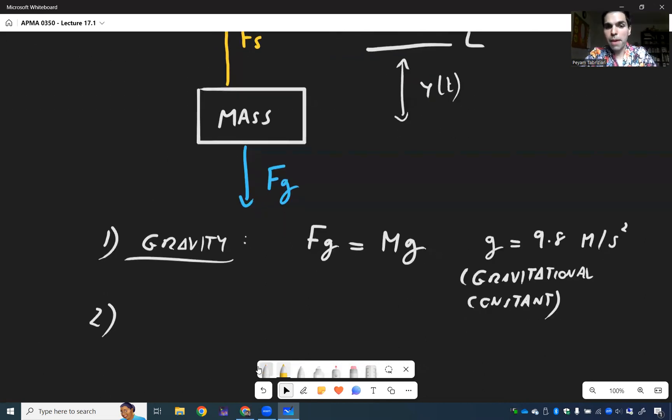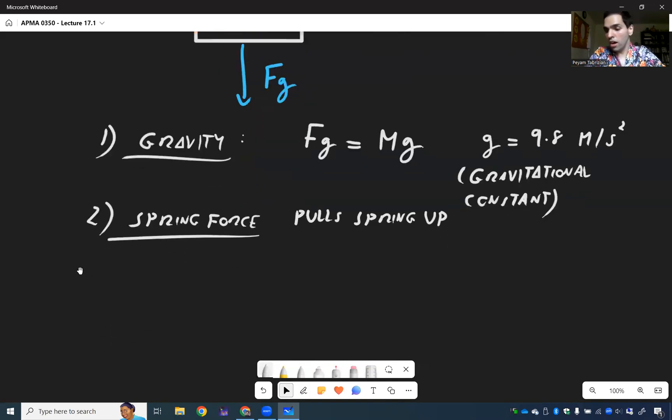And that depends on the material of the spring. Spring force called FS pulls spring up. And this is by what's called Hooke's law, where FS is minus Ks, minus Ks of T if you want.